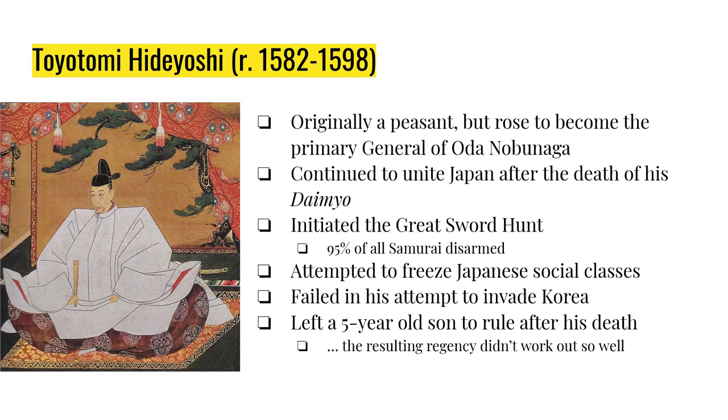After Oda Nobunaga's death, power moves to Toyotomi Hideyoshi. Hideyoshi was originally a peasant but rose to become second-in-command under Nobunaga. After Nobunaga's death, he continues to unite Japan. Once he has control of the government, he initiates the Great Sword Hunt, which required samurai to prove noble descent. Samurai who could not prove their nobility were disarmed and forced back into the peasantry. The Great Sword Hunt disarmed about 95% of all samurai.